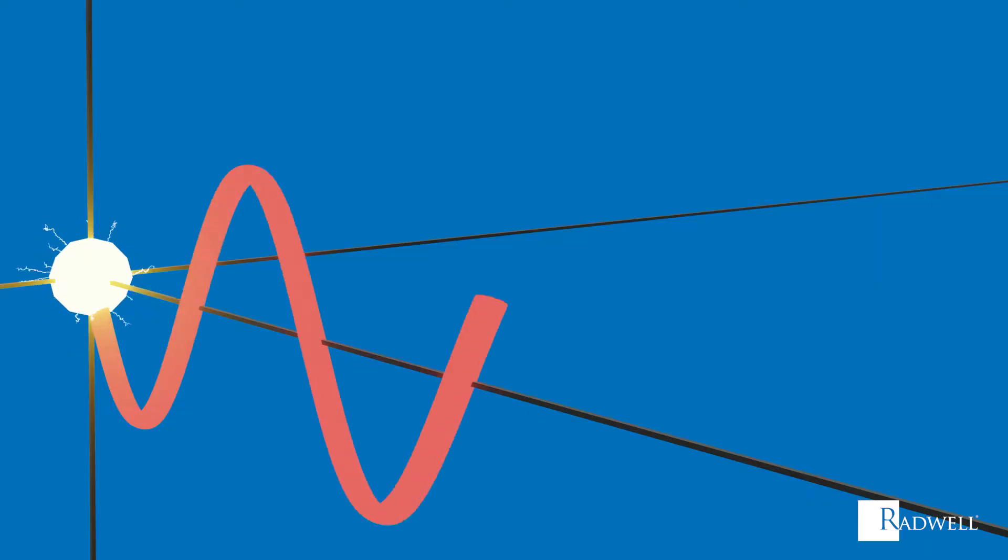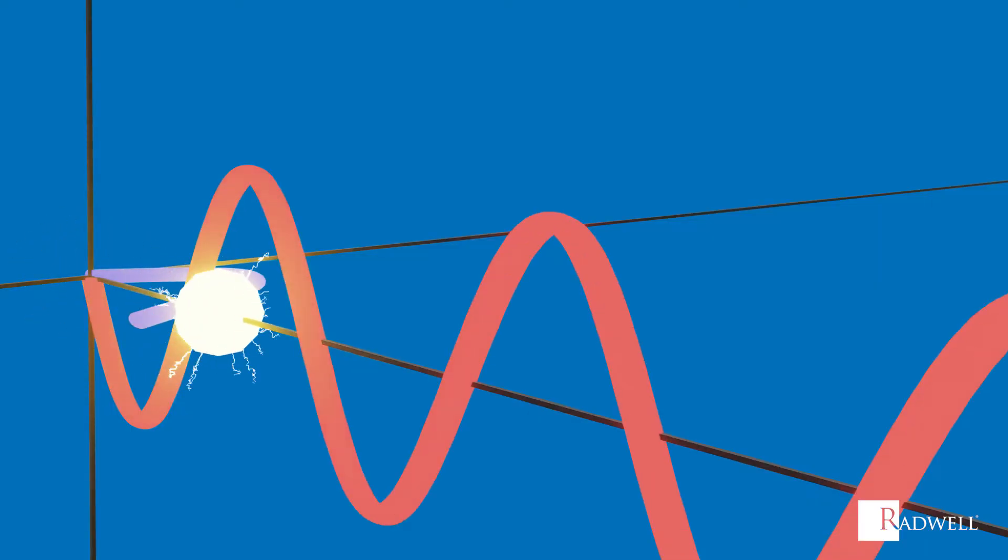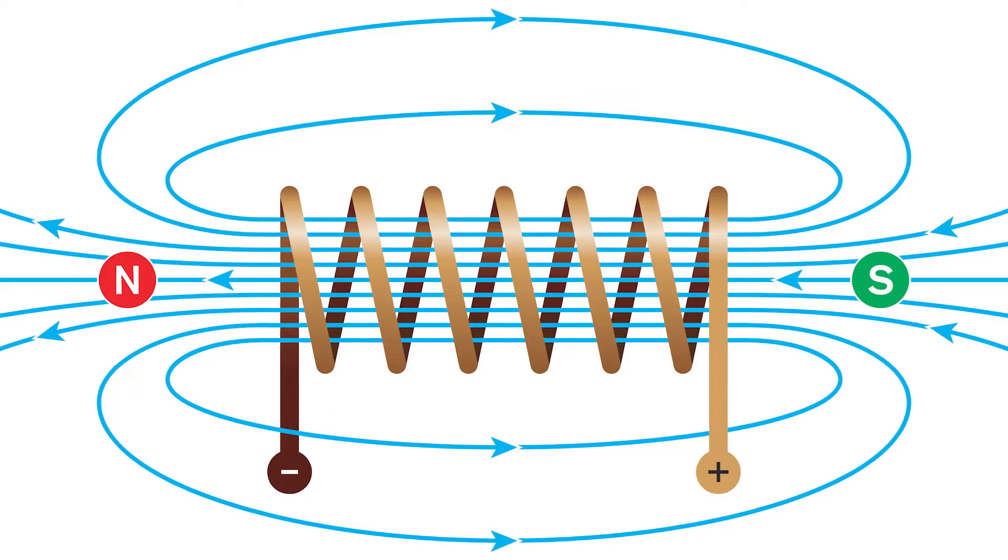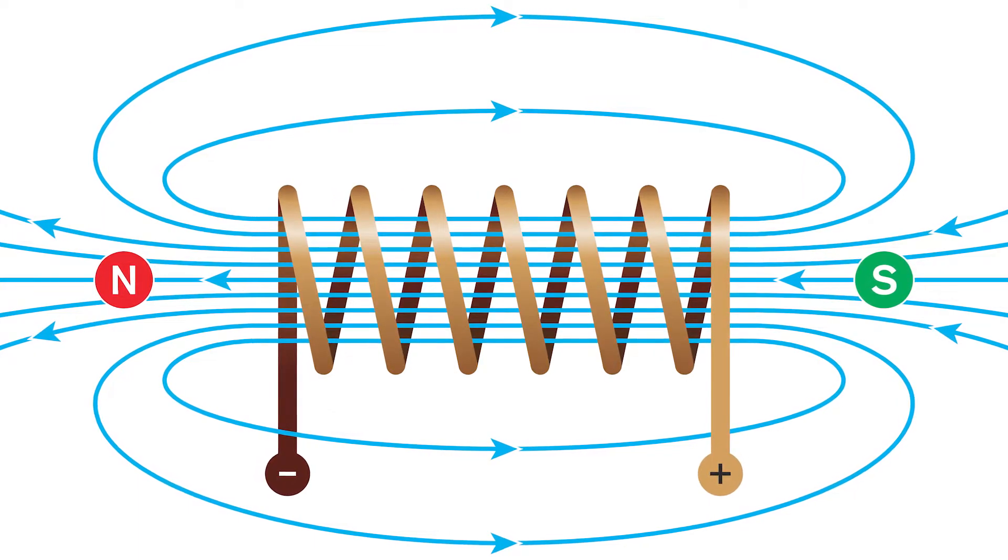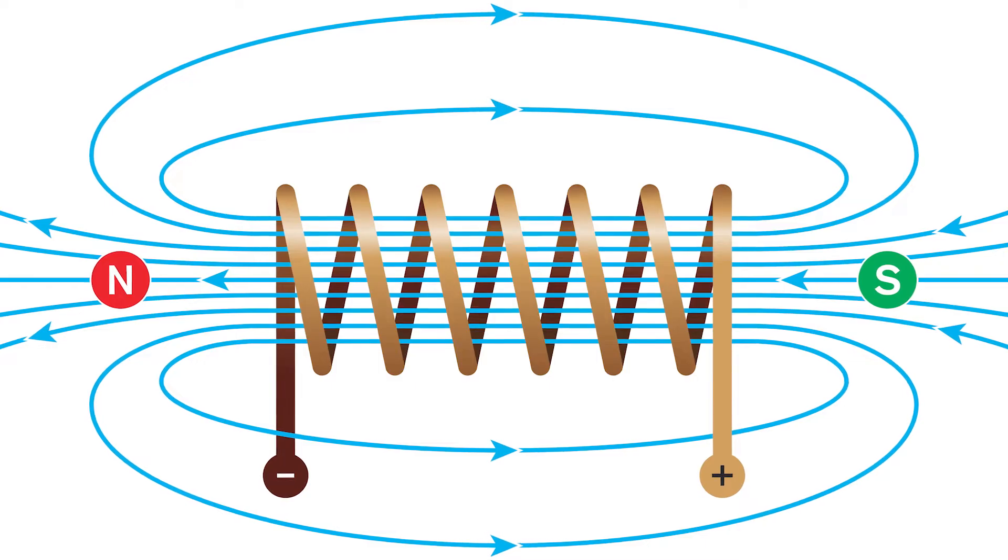A static charge creates an electric field. A moving charge or electric current creates a magnetic field. The interaction between the electric field and magnetic field produces an electromagnetic field.